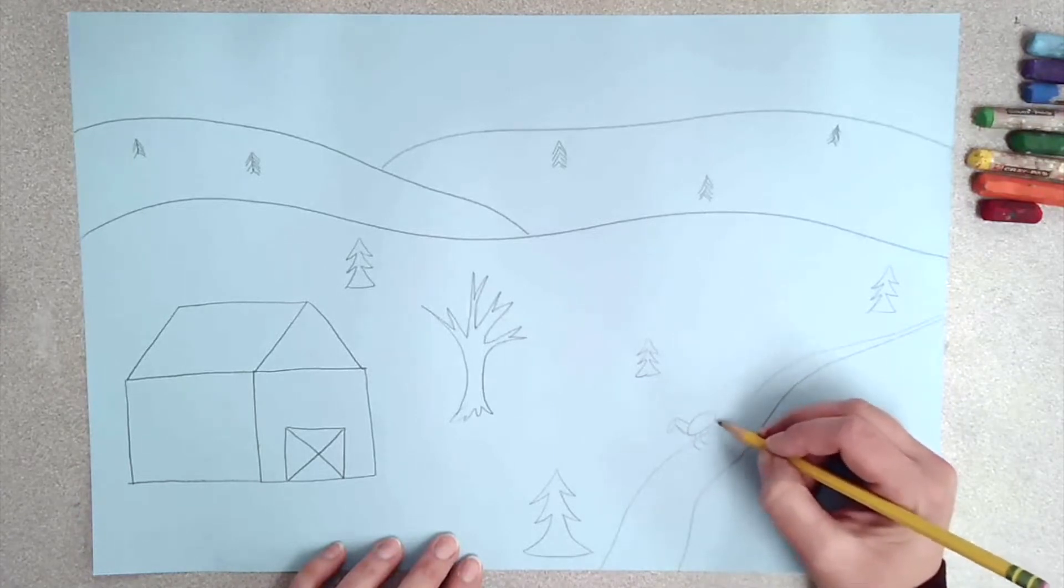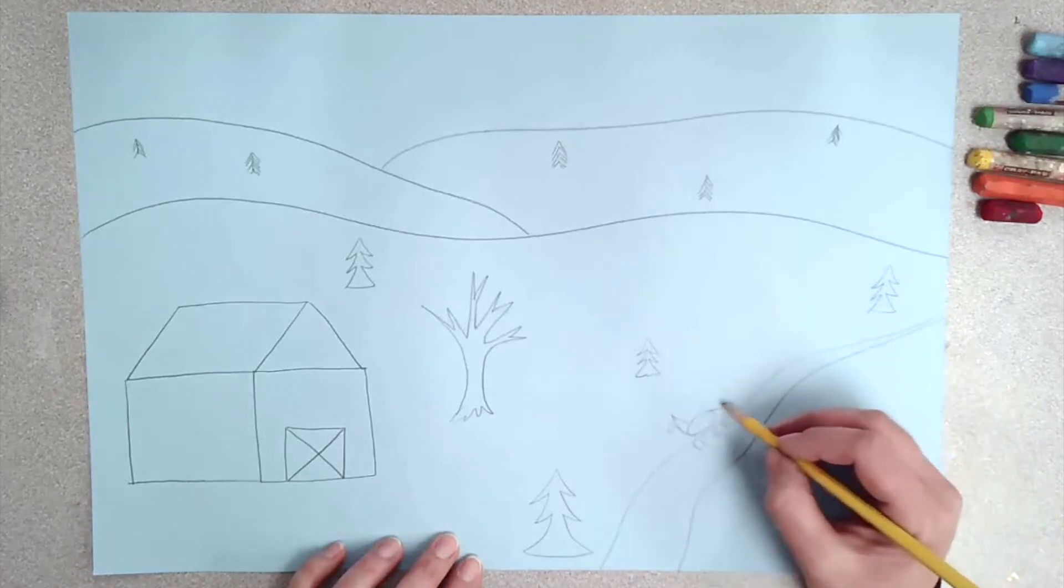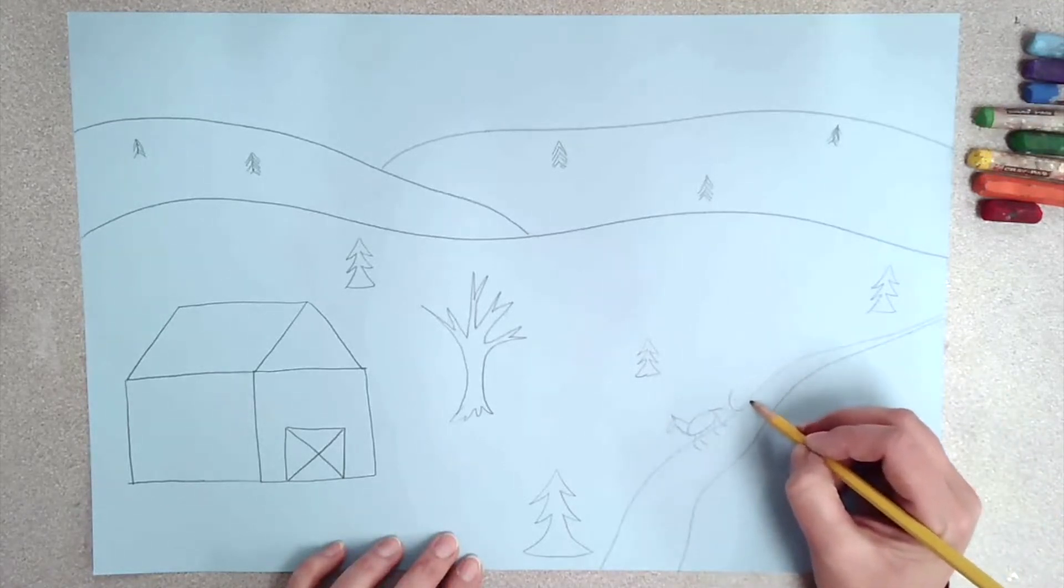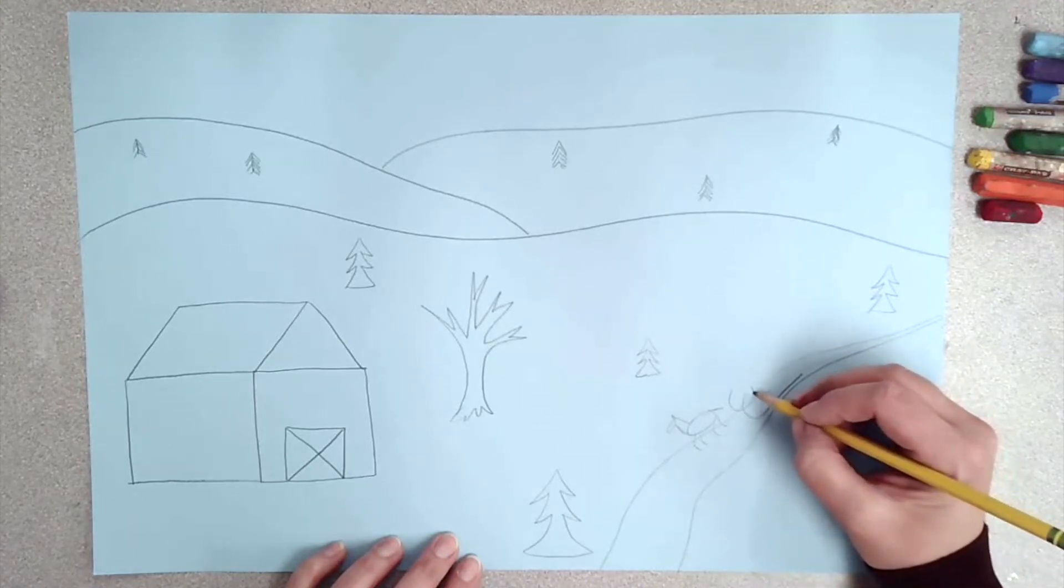As I'm drawing my items in my picture, I'm thinking about the shapes that these items are, like my horse here. I didn't draw really detailed images of my horse. I wanted to just draw the shapes so that you could generally tell what it was.